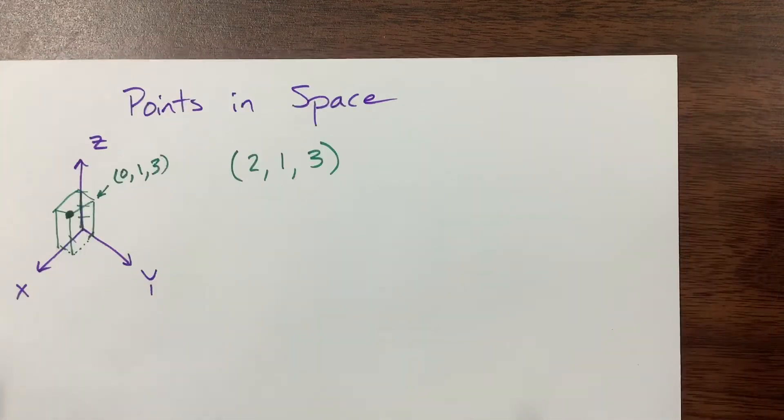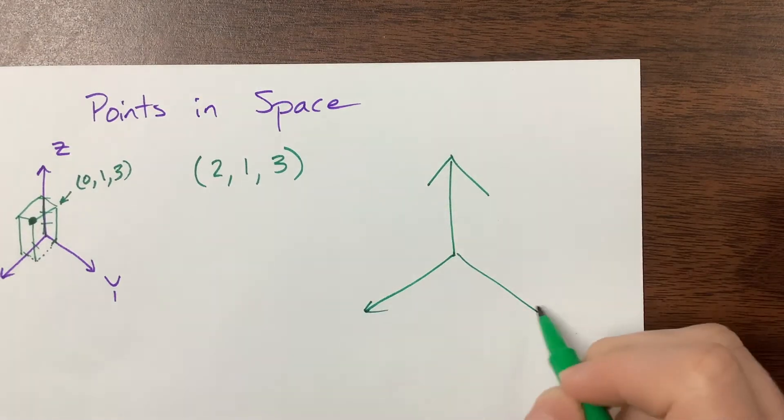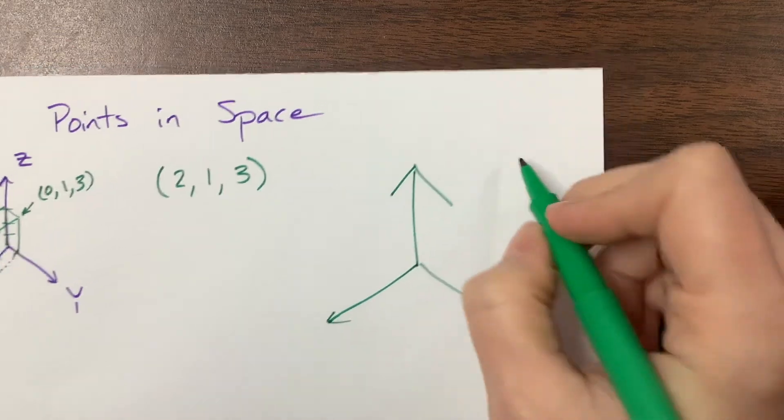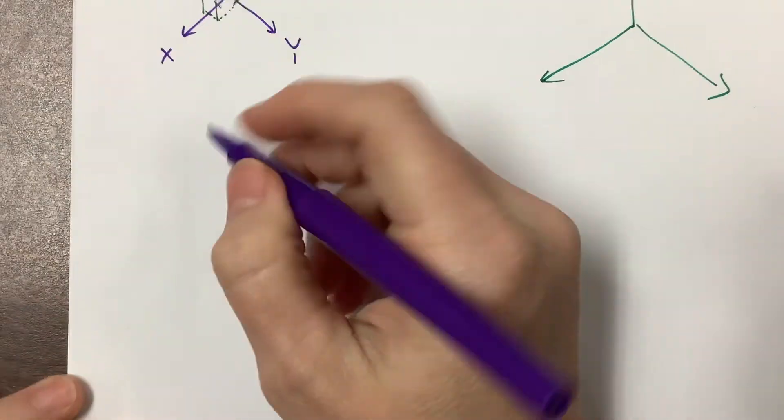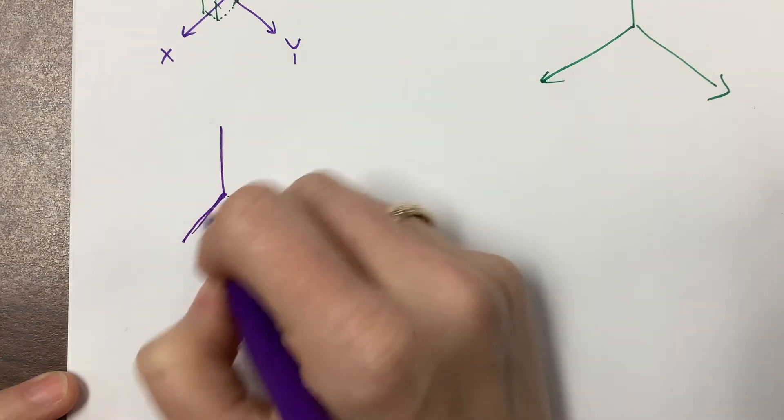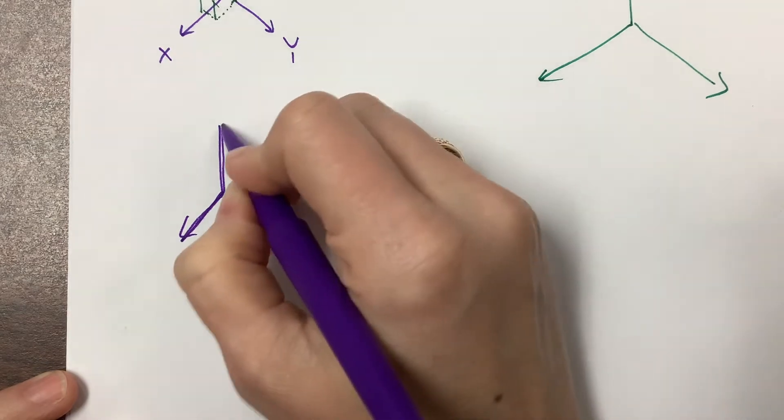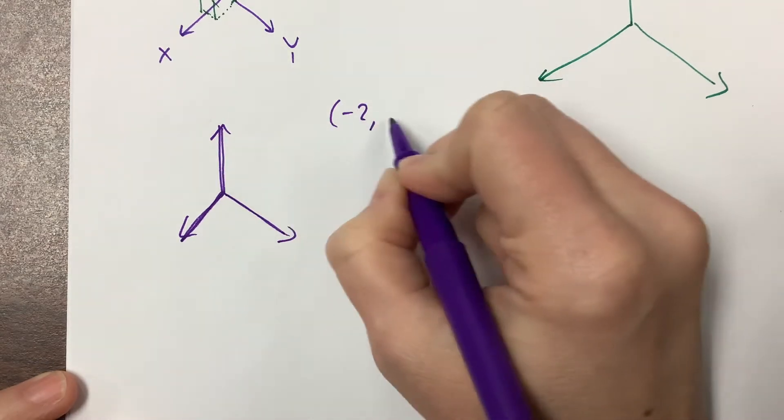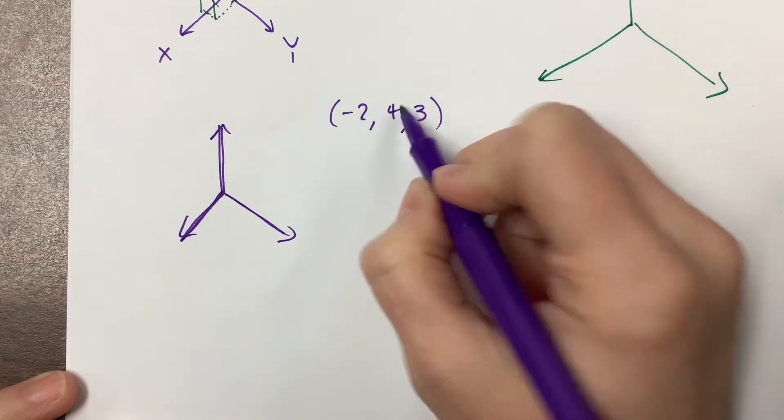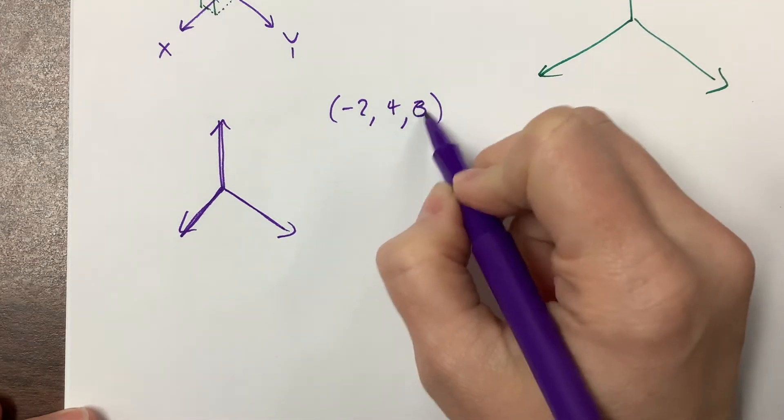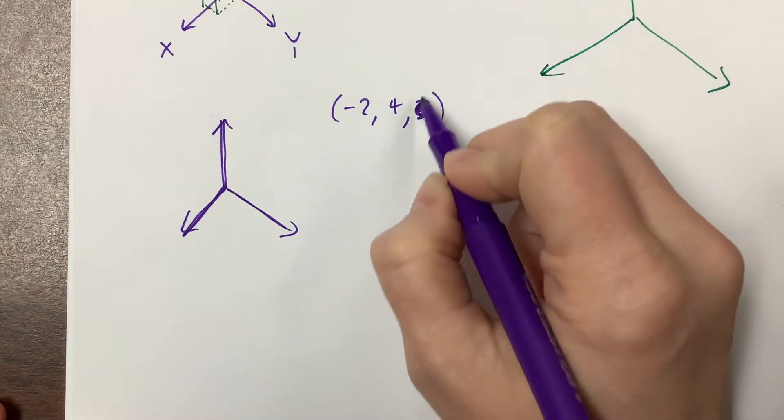If we need to do anything that's negative, say I have the point (-2, 4, 1).